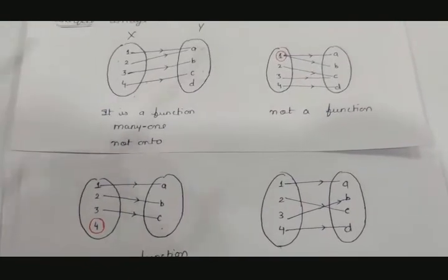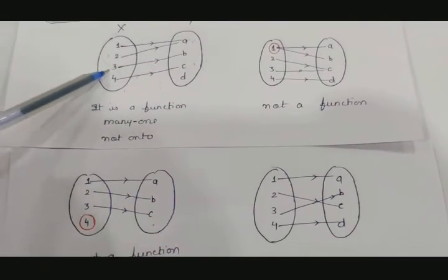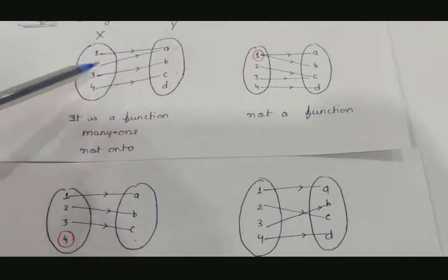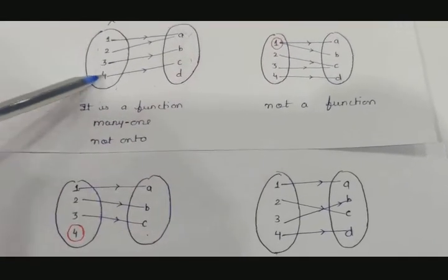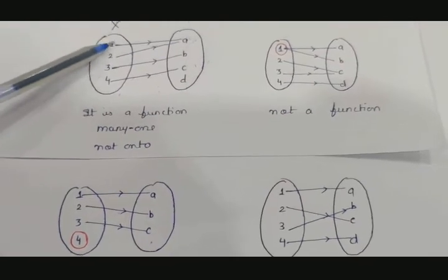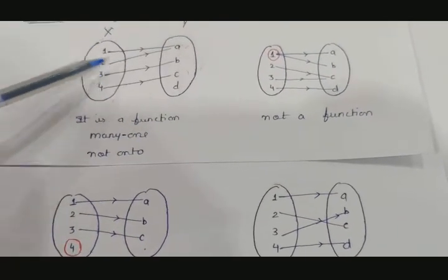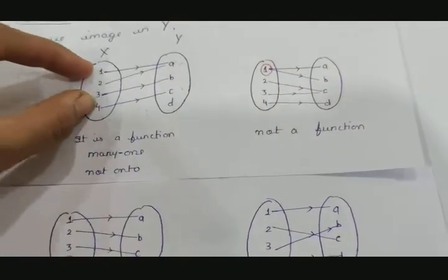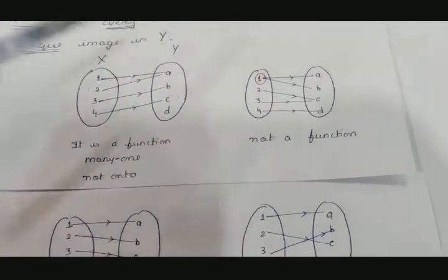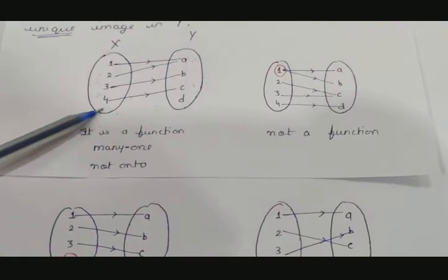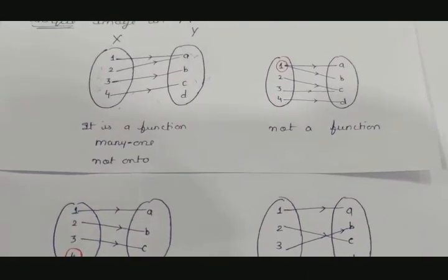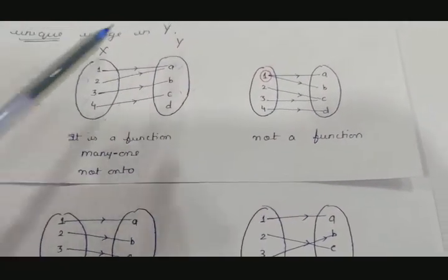Let's understand one-one and onto using the same arrow diagram examples we used for function definition. This function we said is a function — because all elements in x have a single image — but this function is many-one, not one-one. Why? Because 1's image is a and 2's image is also a. We can see many elements having the same image, so this is many-one.